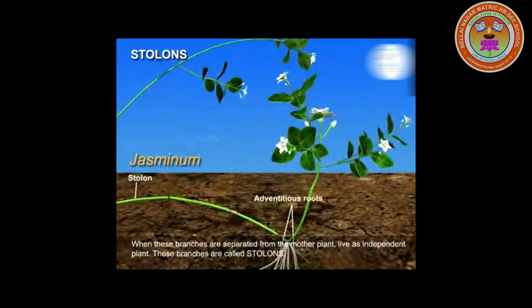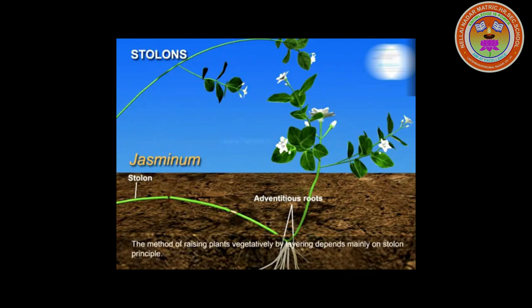Next one is Stolon. It is a weak lateral branch that arises from the base of the main stem. After growing aerially for a short time, it bends downward to touch the ground, where its terminal bud gives rise to a new shoot and adventitious roots. Example: Jasminum.